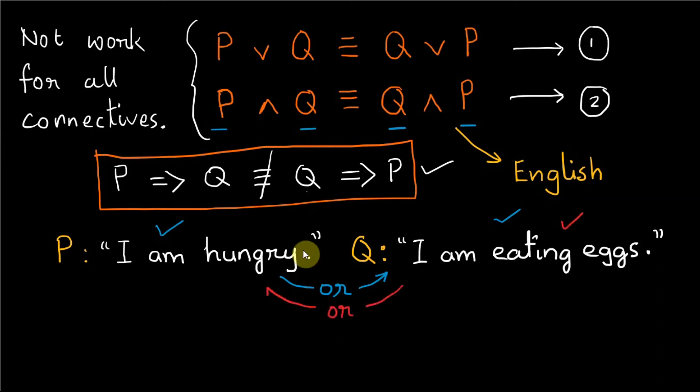The first commutative law will be I am hungry or I am eating eggs, it is equivalent to saying I am eating eggs or I am hungry. Various input combinations for P and Q are possible, but either statement P or Q if true will make the first equivalence true.